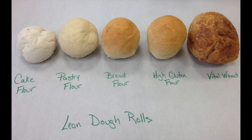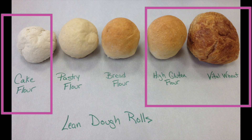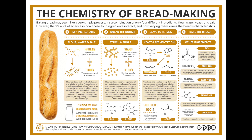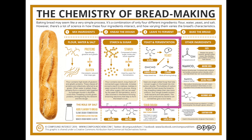You can see here someone did a test with different kinds of flour that have different gluten content. Cake flour has the lowest gluten content and high gluten flour and vital wheat have a much higher gluten content. You can see the difference it makes when they've baked — the high gluten flours rise a lot higher and they also brown more.